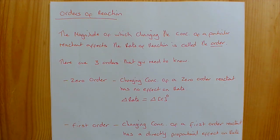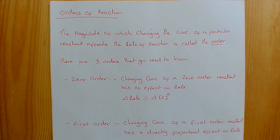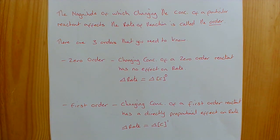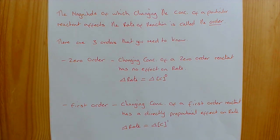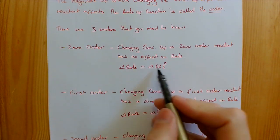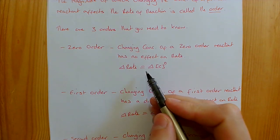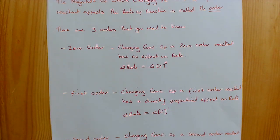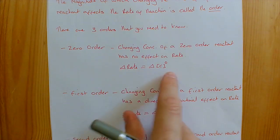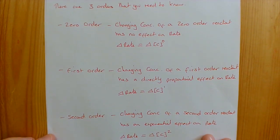There are three orders you need to know. The first is zero order, which is when changing the concentration of that particular reactant has no effect on the rate whatsoever. The rate is completely unaffected by increasing or decreasing the concentration, and it can be written as: the change in rate is proportional to the change in concentration to the power zero — and anything to the power zero is one.